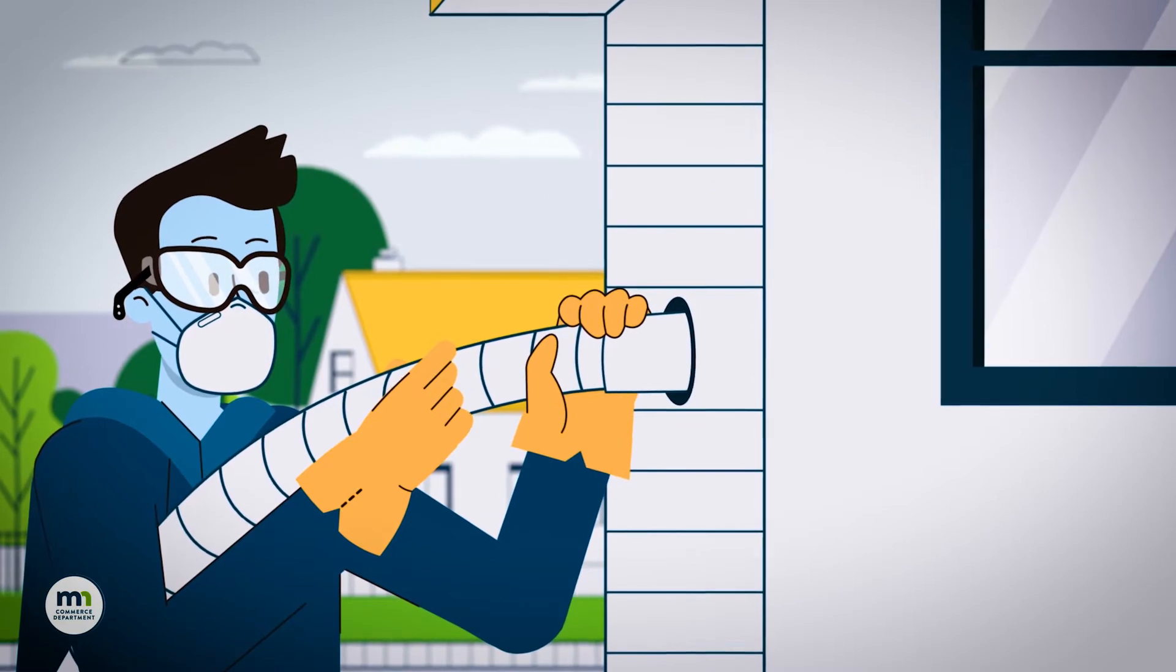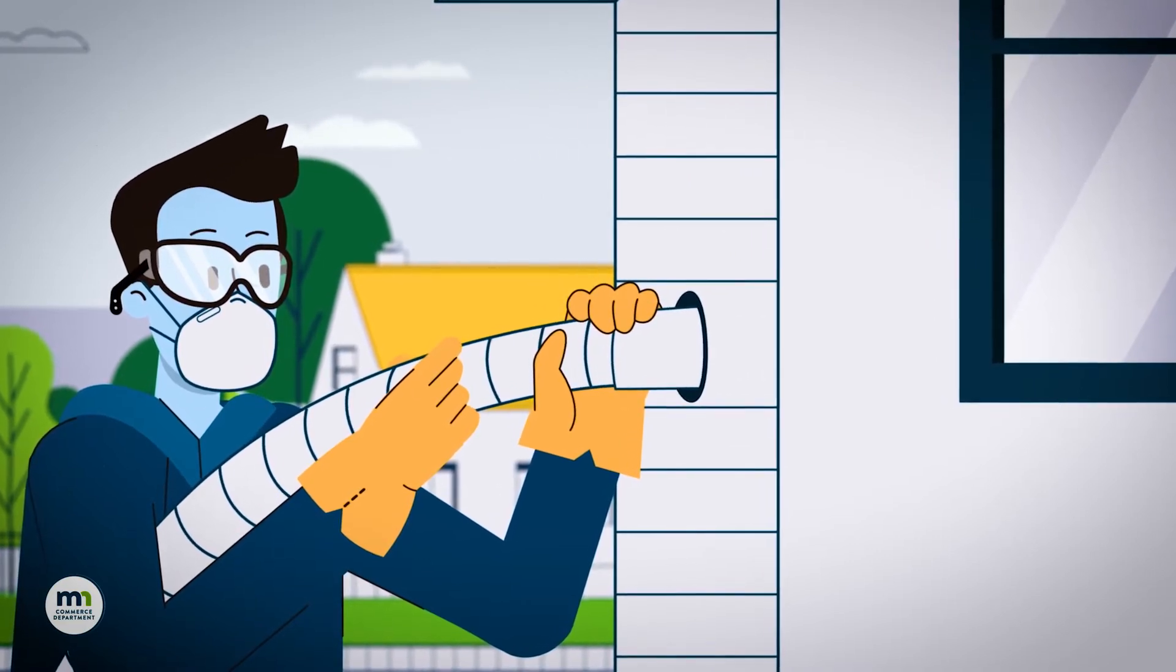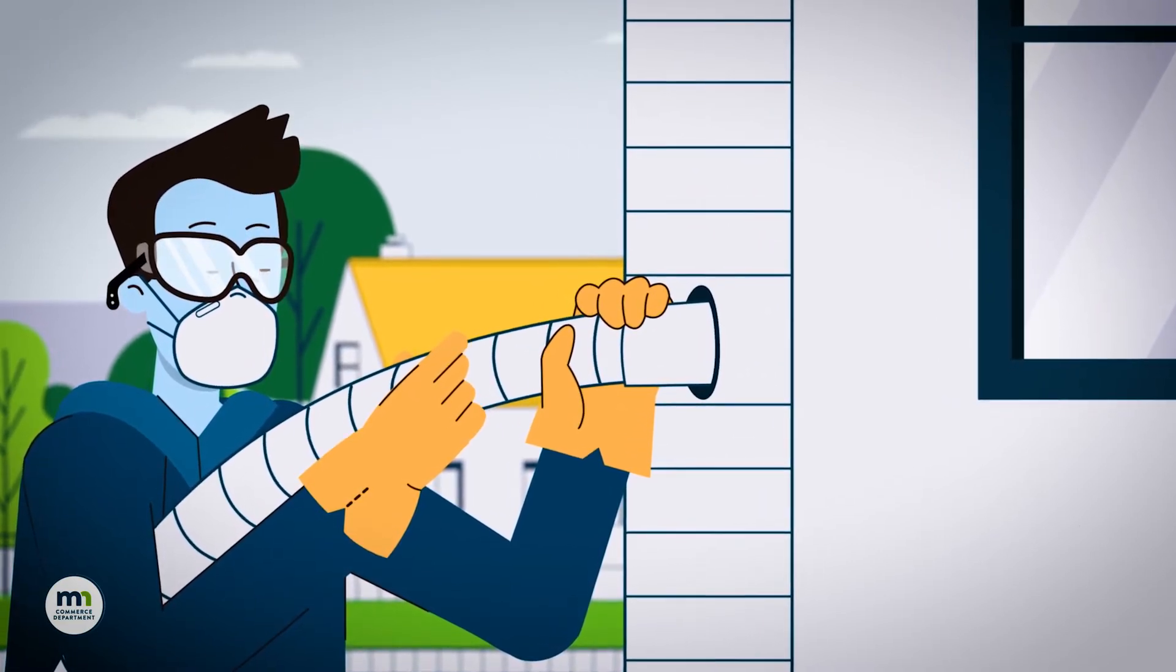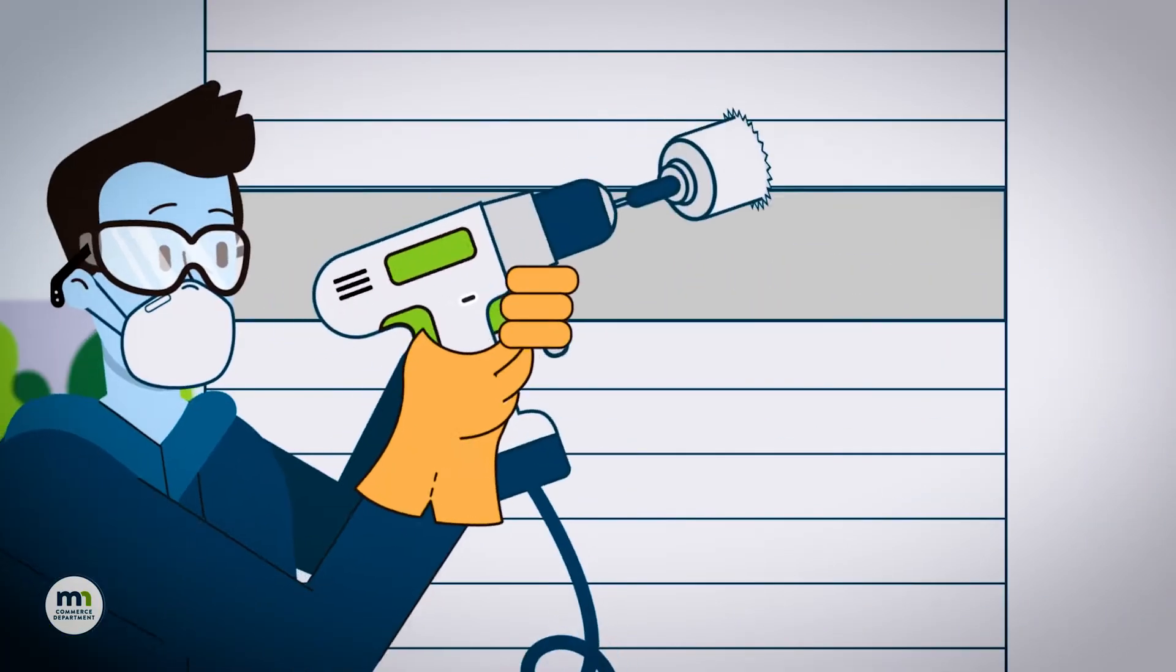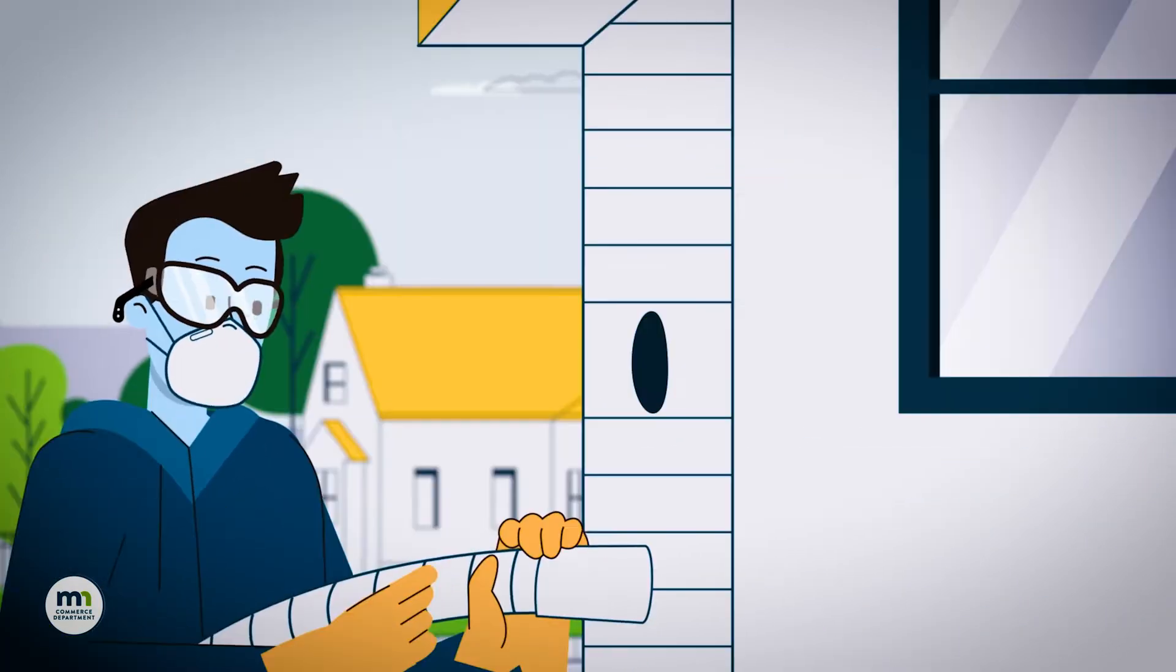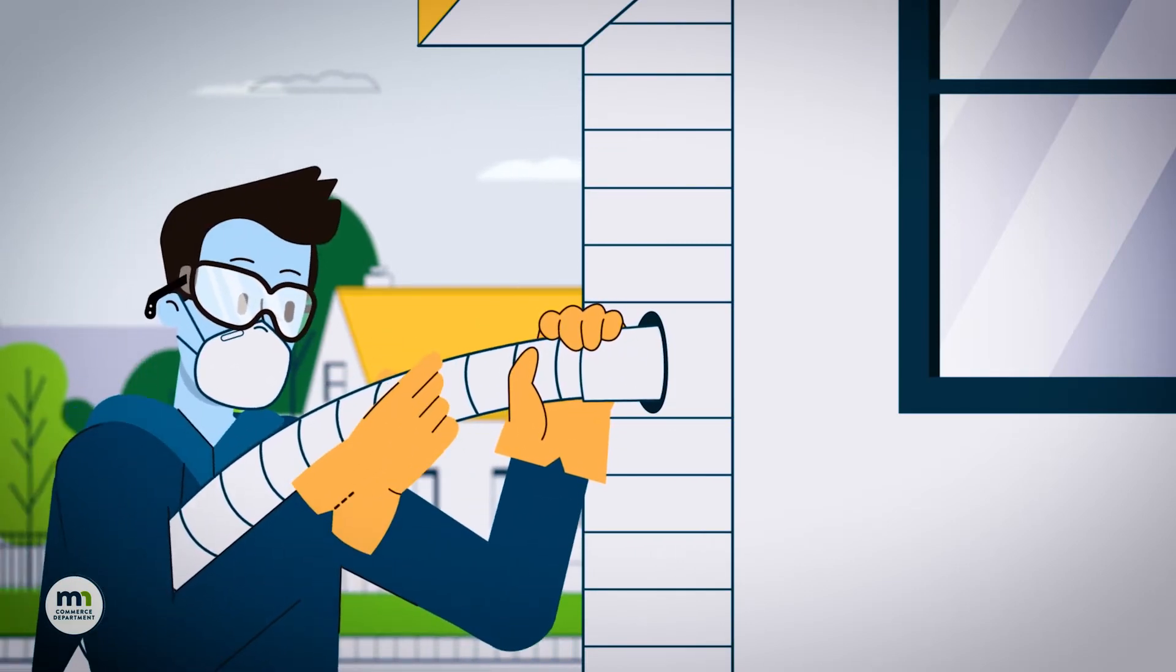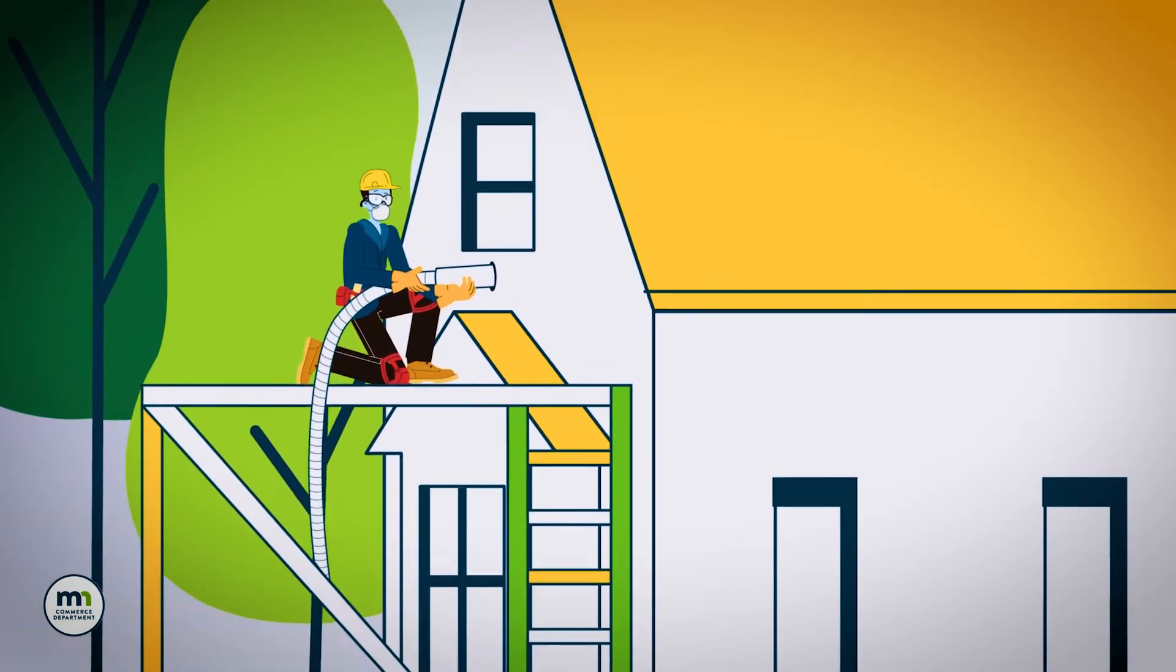Sometimes it's best for our expert contractors to blow in insulation from outside your home. To do this, they may remove some siding and drill holes on the outside of your house. Then they will use a hose to blow insulation into your walls. Depending on your house, this may require ladders or scaffolding.